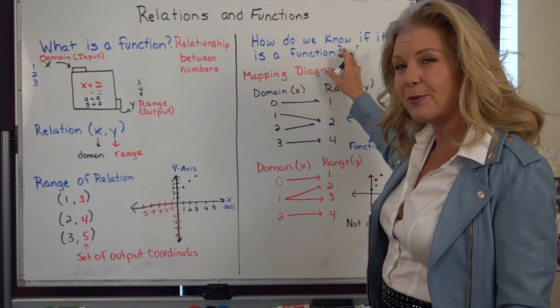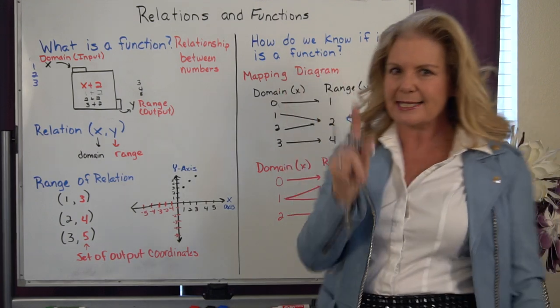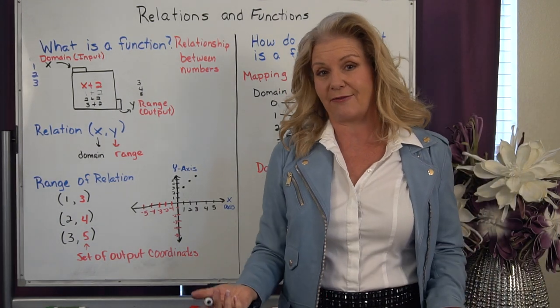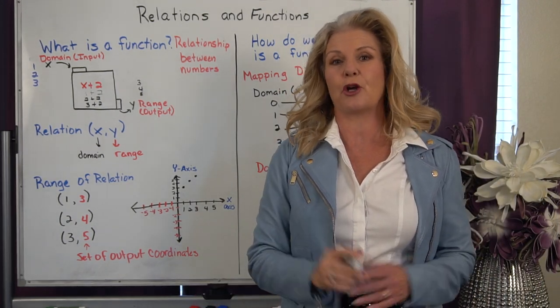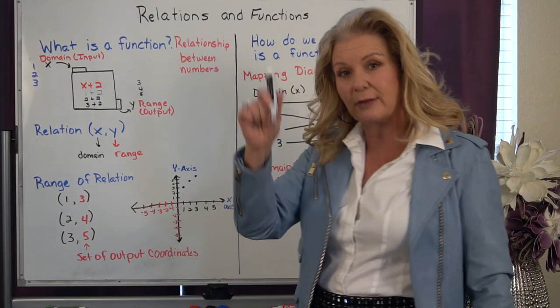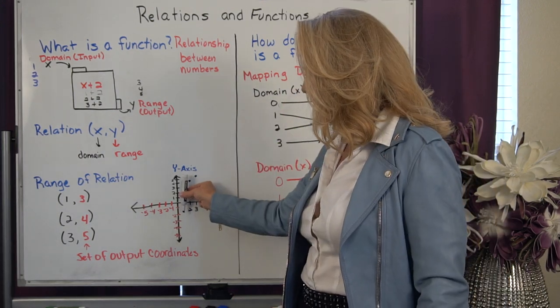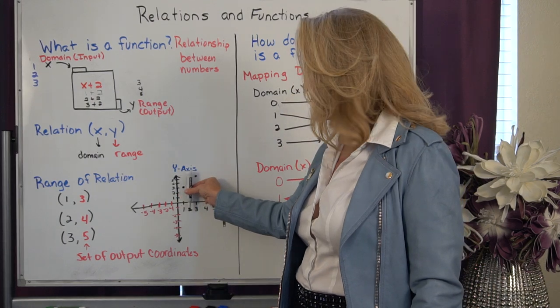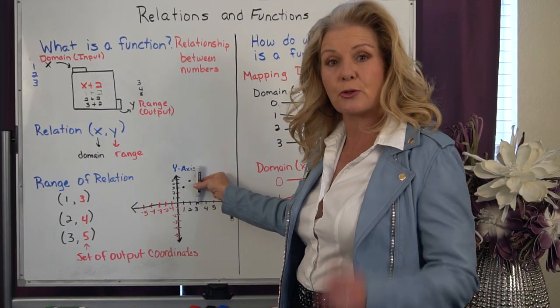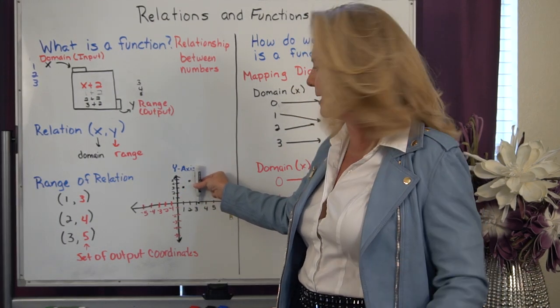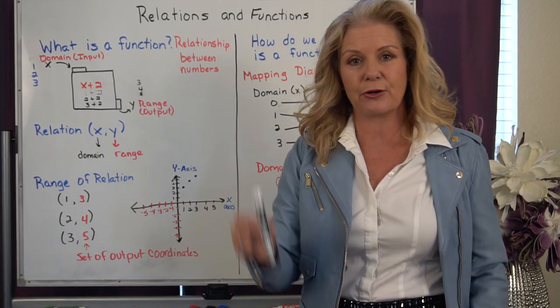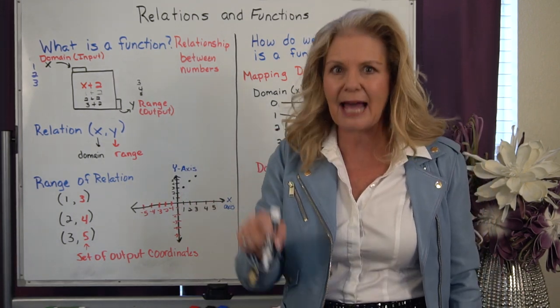Now, how do we know if we have a function? Well, the easiest way is actually to graph it because then we can use what's called the vertical line test. And you literally take your pencil. And if you go through each point, and it only goes through that single point and no other point, that passes the vertical line test. That means we have a function.